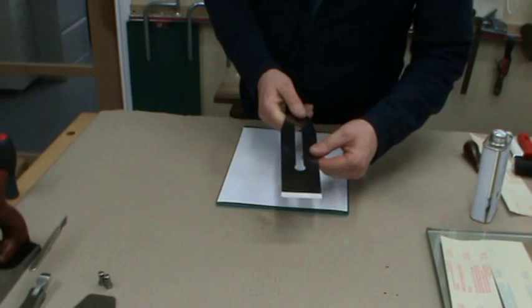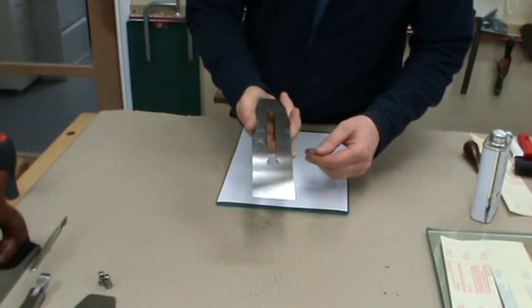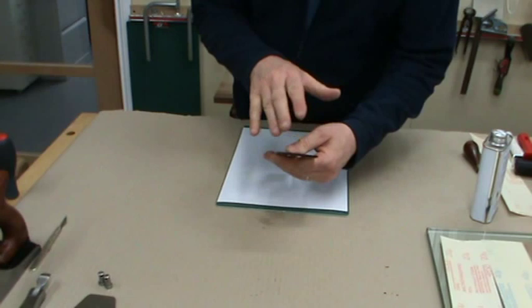I have here the new Wood River 4½ smoothing plane blade. It's a T10 steel, very similar to what we used to have as a W1 water quench steel. Very good quality. I'm going to do this straight out of the box and sharpen this one up, see how we fare with it.